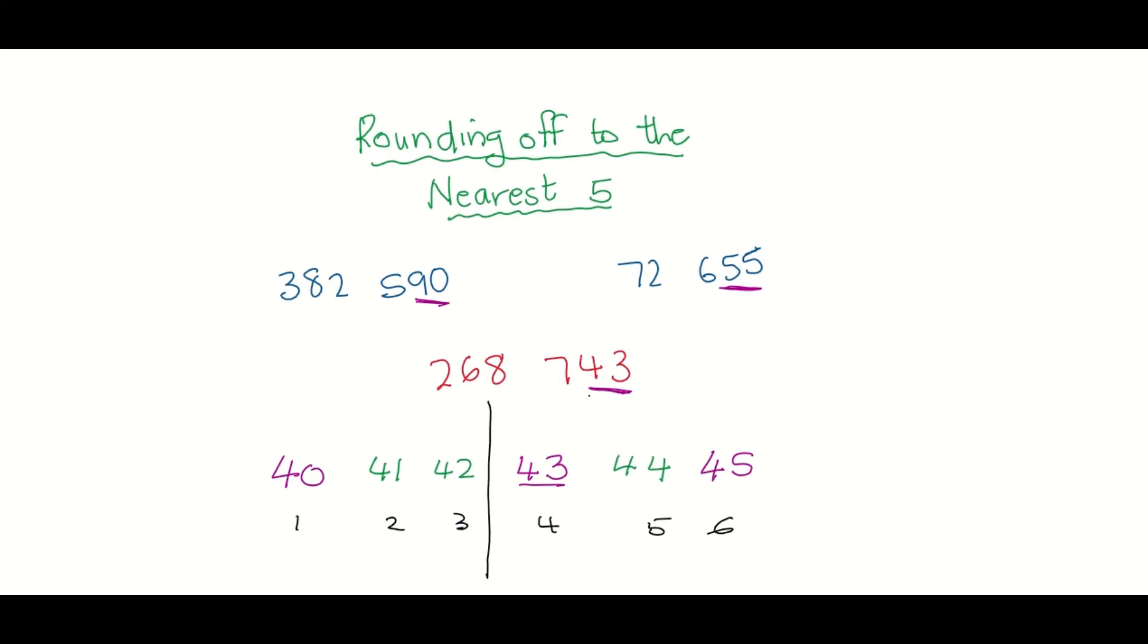If the number you're working with falls in the left group, then you round off to the previous multiple of five. But if it falls in the second group on the right hand side, you will round off to the next multiple of five. So this number will round off to 268,745.